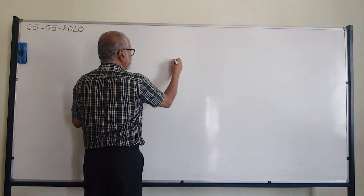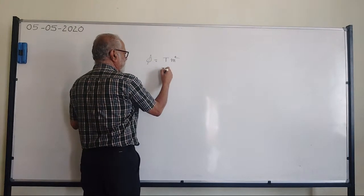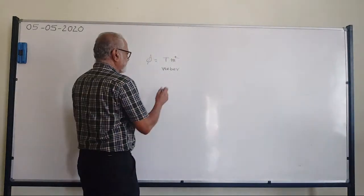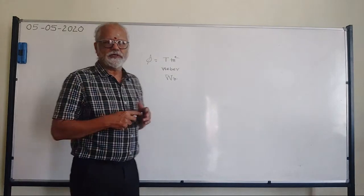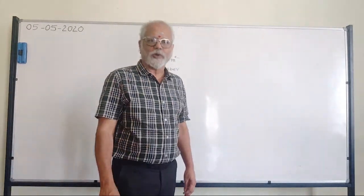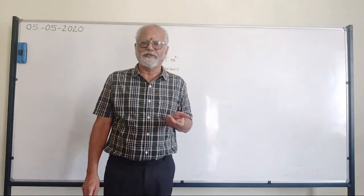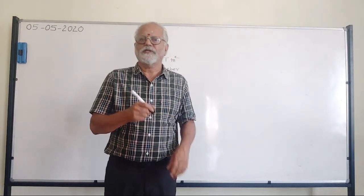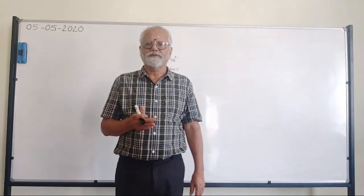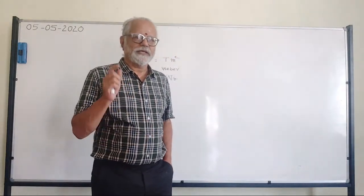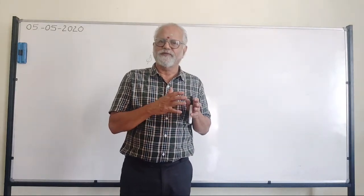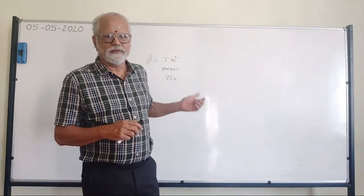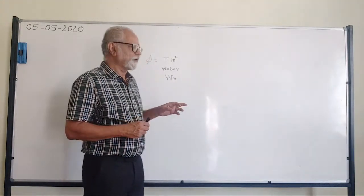Tesla meter square — that is Φ — is written as Weber (Wb), named after the scientist Weber. This is the unit of magnetic flux. Tesla meter square is nothing but Weber. In physics, many physical units are named after scientists. You should never forget the fundamental units in terms of length, mass, time, and electric current. Even though units carry scientists' names, the fundamental units remain the foundation.